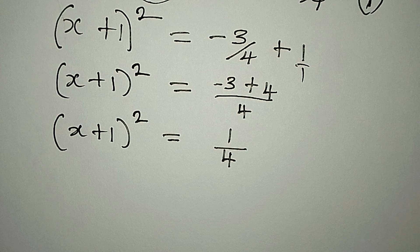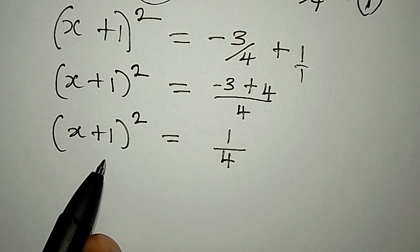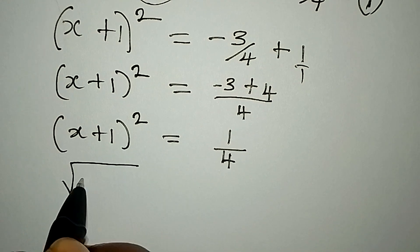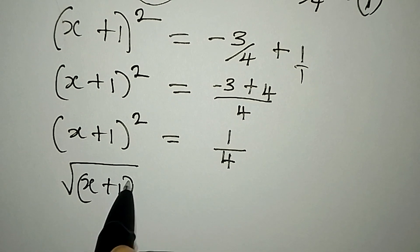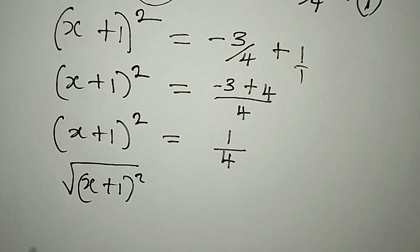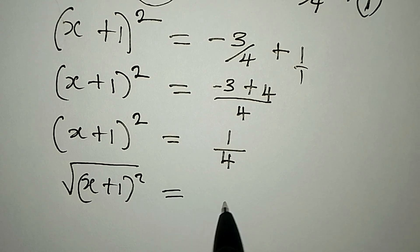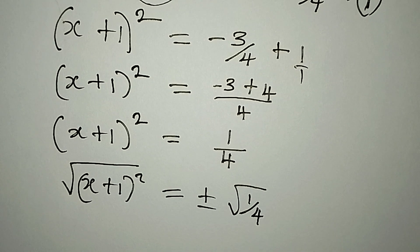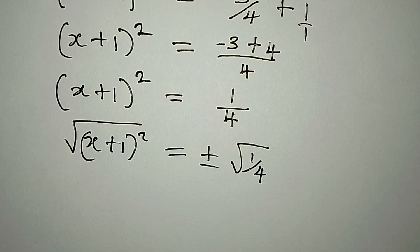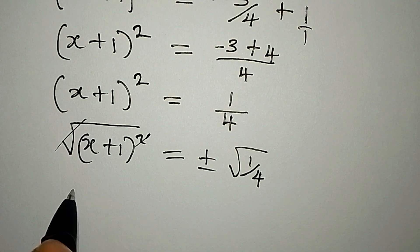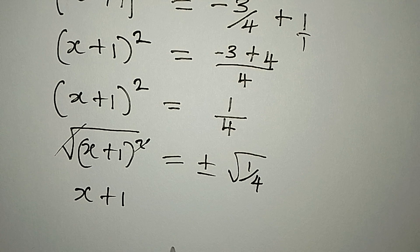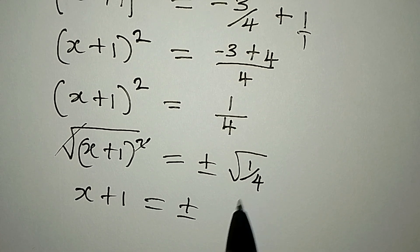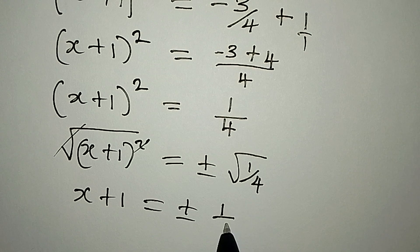Now what do we do from here? We are going to take the square root of both sides. So we take the square root of (x + 1)², and this will equal plus or minus the square root of 1 over 4. This cancels the square, and now x + 1 equals plus or minus — square root of 1 is 1 and square root of 4 is 2 — so plus or minus 1 over 2.